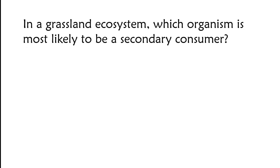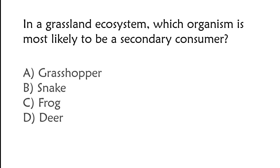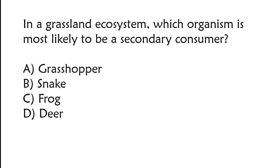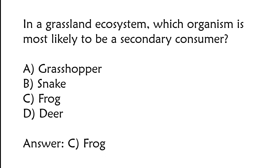In a grassland ecosystem, which organism is most likely to be a secondary consumer? A) Grasshopper, B) snake, C) frog, D) deer. The correct answer is option C, frog.